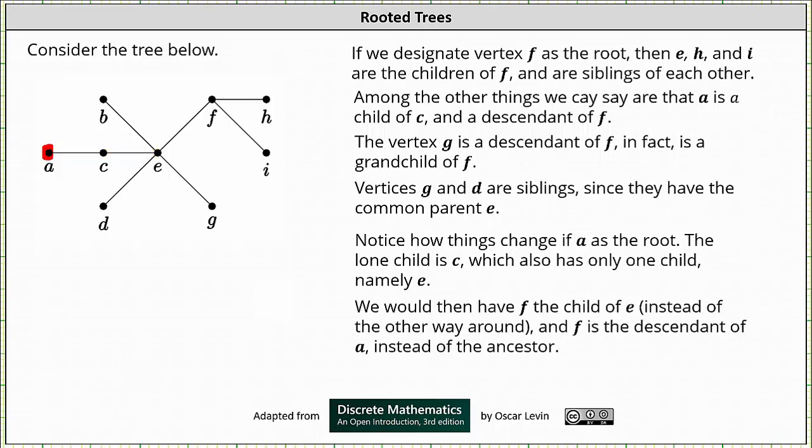We would have that F is the child of E, instead of the other way around when F was the root, and F is the descendant of A instead of the ancestor. Vertex F is here and vertex E is here. The two vertices are adjacent. Now E is closer to the root than F, which indicates E is the parent of F and F is the child of E.